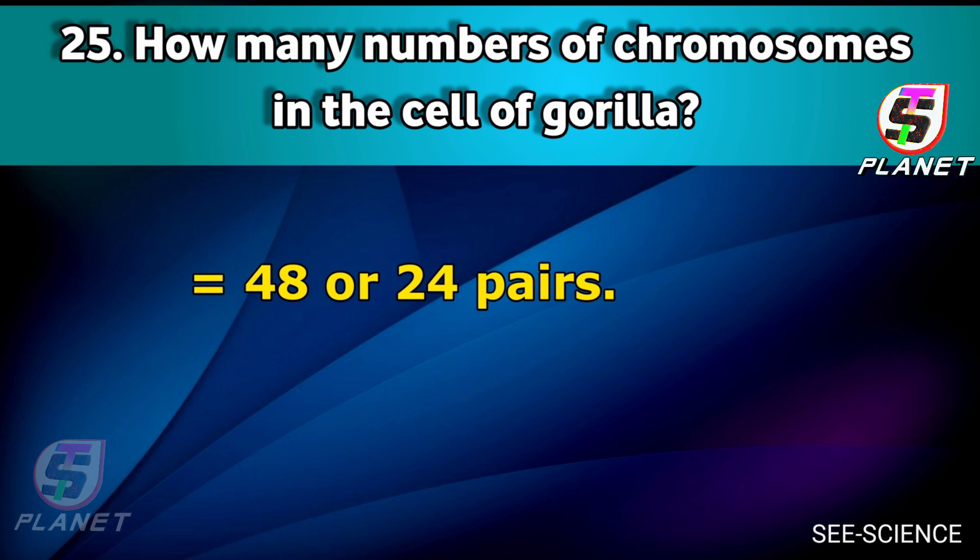Next question: How many chromosomes are in the cells of a gorilla? Answer: 48, or 24 pairs.